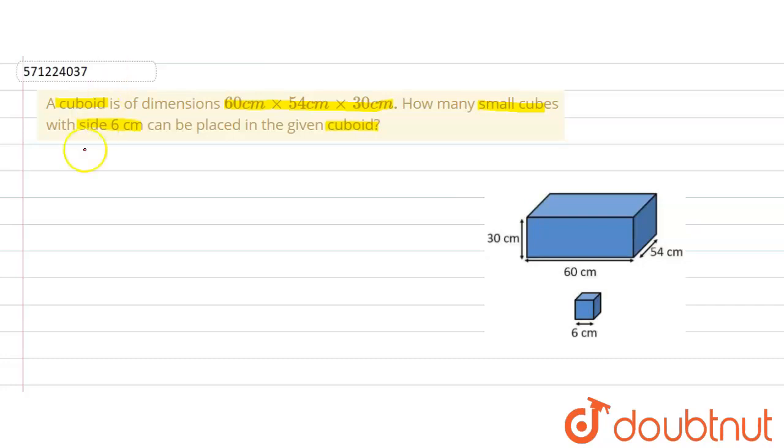So formula for volume of cuboid is: volume of cuboid is equal to length multiplied by breadth multiplied by height, where L, B, and H are length, breadth, and height. So let's find out the volume of cuboid.